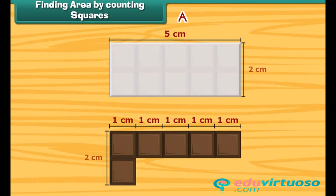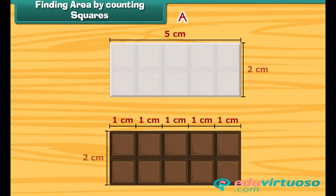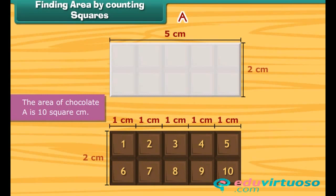The width of this chocolate is 2 cm. So, 2 squares can be arranged along its width. Thus, in total, 10 squares can be arranged on it. So, the area of chocolate A is 10 square cm.